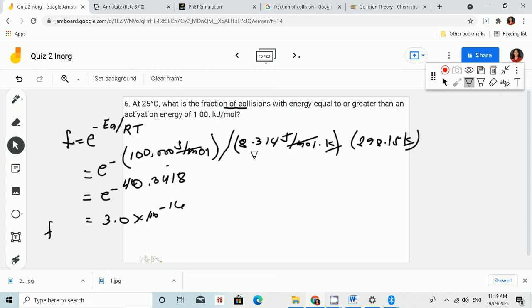Now let's look at relationships here. If we have this formula, F equals e to the negative Ea over RT. If we increase the temperature,